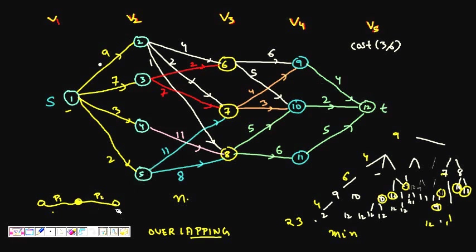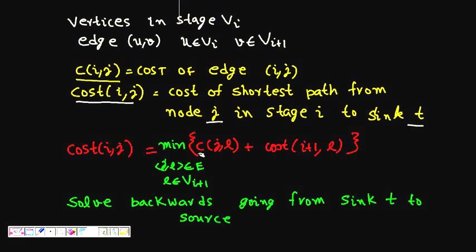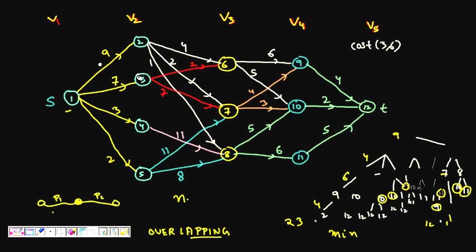We can now formulate the dynamic programming recurrence relation. For cost(i,j) — the cost from a node in stage i to the final destination t — if from stage 2 I can go to the next stage in three ways, and I already know the shortest path from nodes 6, 7, and 8, then I simply add the edge cost plus the minimum cost from that node to t.